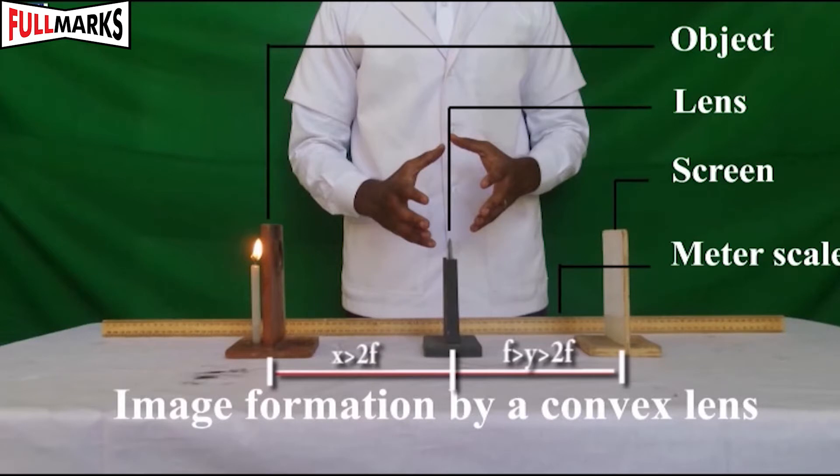Procedure: Focus a sharp, clear, and inverted image of a distant object on the screen. This is the rough focal length. Measure it with the help of a meter scale.